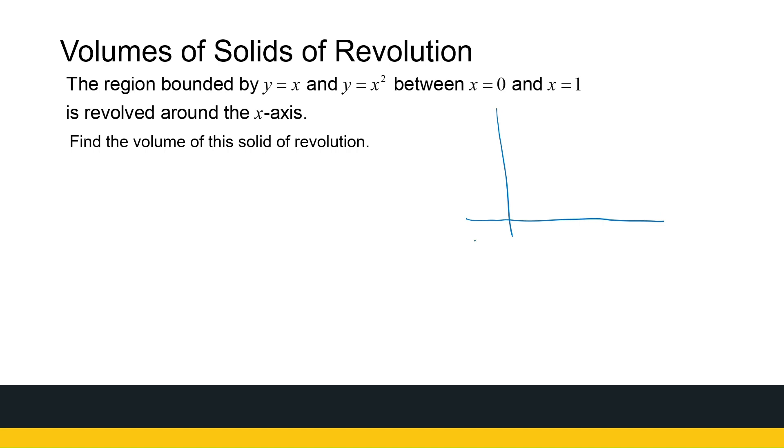So what we've got now, we've got y equal to x, and we've got y equal to x squared. Now we know they intersect at 0 and 1, and thankfully that's the area we're looking for. So we're looking at this shape now. We want to take this shape and rotate it around the x-axis and find the volume of that solid.